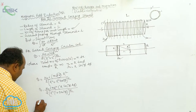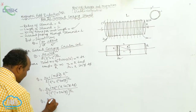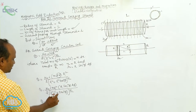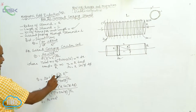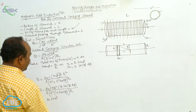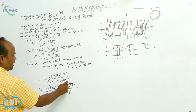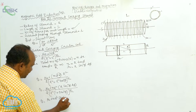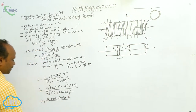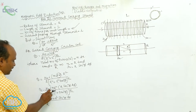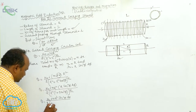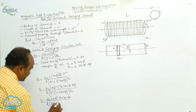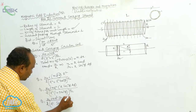So B equals μ₀·i·n·r² by 2, with dx = r·sec²φ·dφ, over r² into 1 plus tan²φ whole to the power of 3 by 2. r² into r gives r cube. Now 1 plus tan²φ is nothing but sec²φ, whole to the power of 3 by 2.